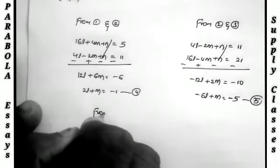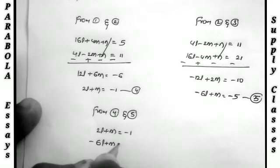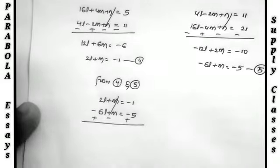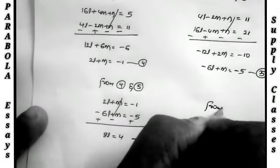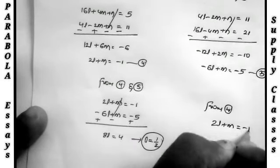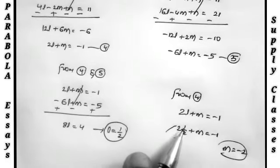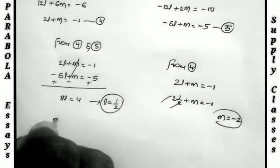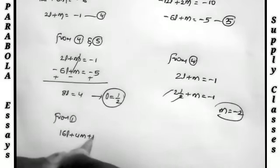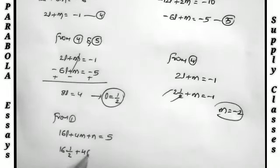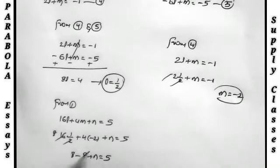From equations 4 and 5: equation 4 is 2l + m = −1, equation 5 is −6l + m = −5. Subtracting gives 8l = 4, so l = 1/2. Substituting l = 1/2 into equation 4: 2(1/2) + m = −1, so 1 + m = −1, giving m = −2. Substituting l = 1/2 and m = −2 into equation 1: 16(1/2) + 4(−2) + n = 5, so 8 − 8 + n = 5, giving n = 5.